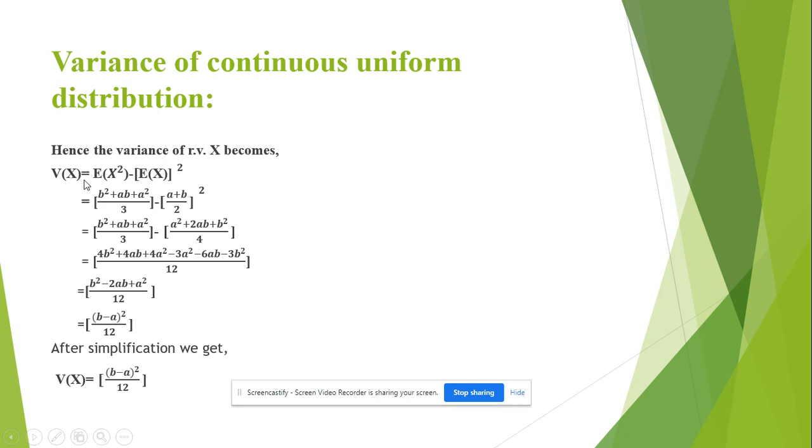Substitute this value in the variance and after simplification, the variance of the continuous uniform distribution comes out to be (b minus a)² upon 12.